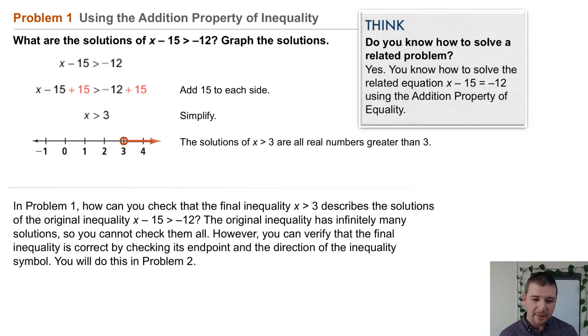Below it says, in problem 1, how can you check that the final inequality x > 3 describes the solutions of the original inequality, the one we started with? The original inequality has infinitely many solutions, so you can't check them all.